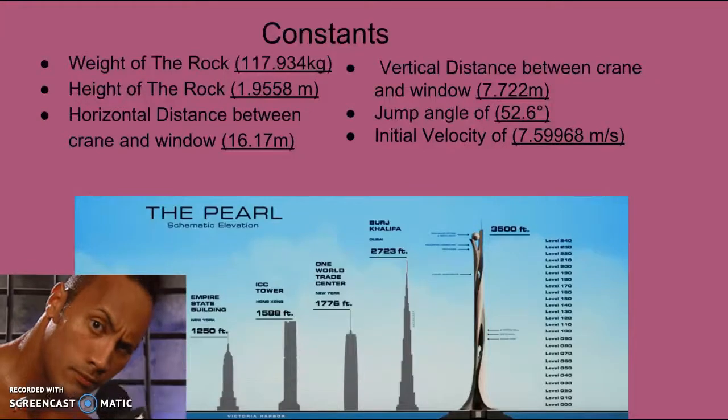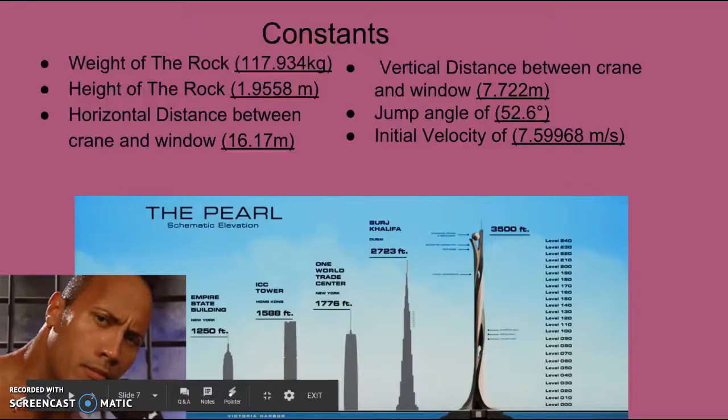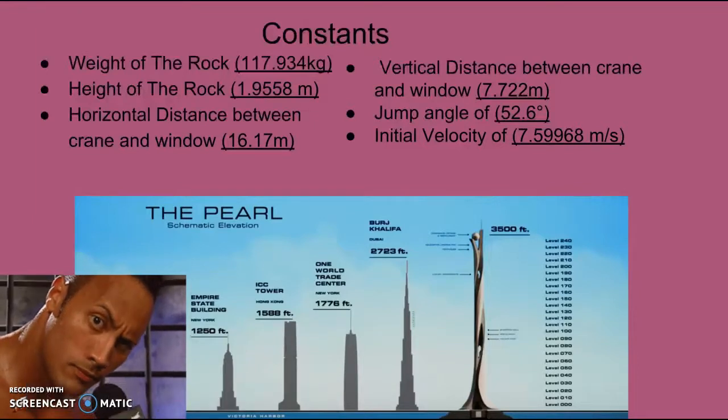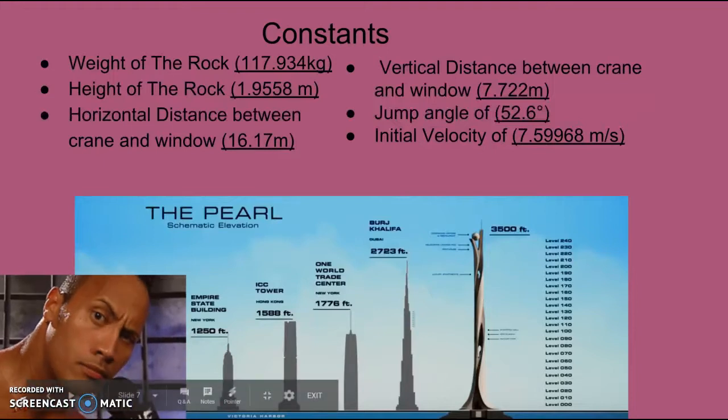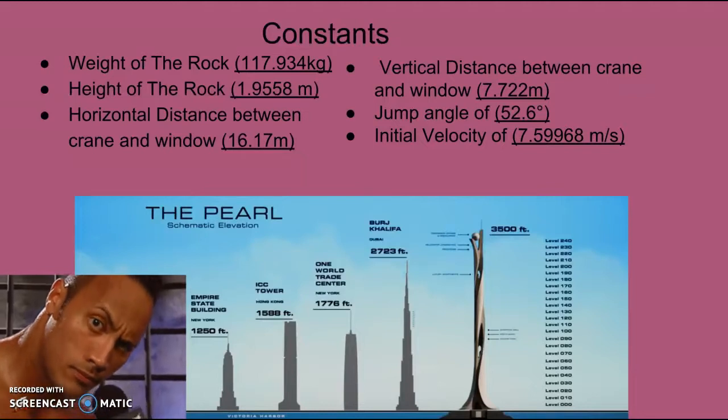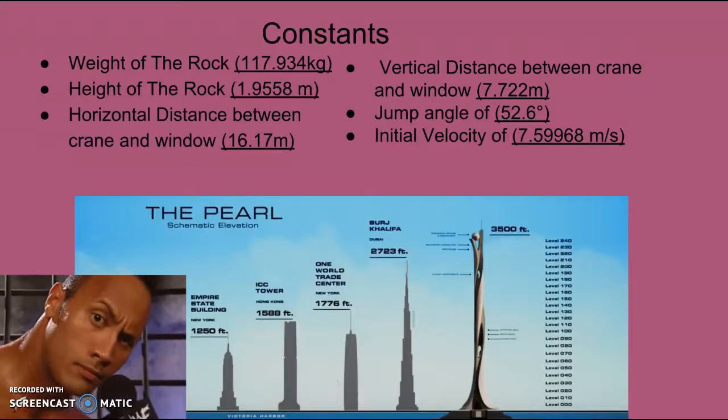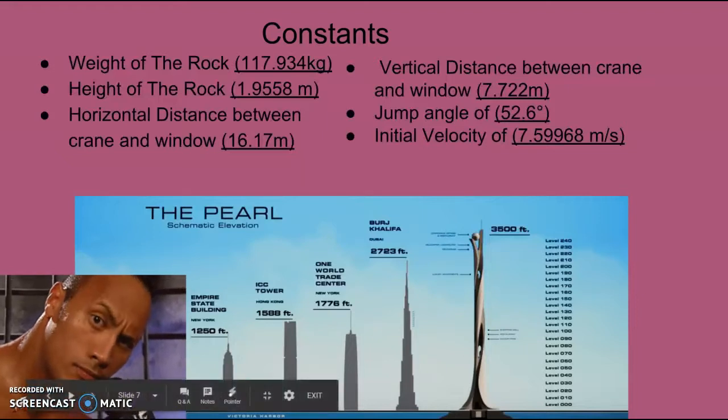Here we have the constants. We have the weight of The Rock, which is 260 pounds converted to kilograms, which gives us 117.934 kilograms. We have the height of The Rock, which is 6 feet 5 inches, converted to meters, which gives us 1.9558 meters. We have the horizontal distance between the crane and window found from LoggerPro, which is 16.17 meters. The vertical distance also found from LoggerPro was 7.722 meters.